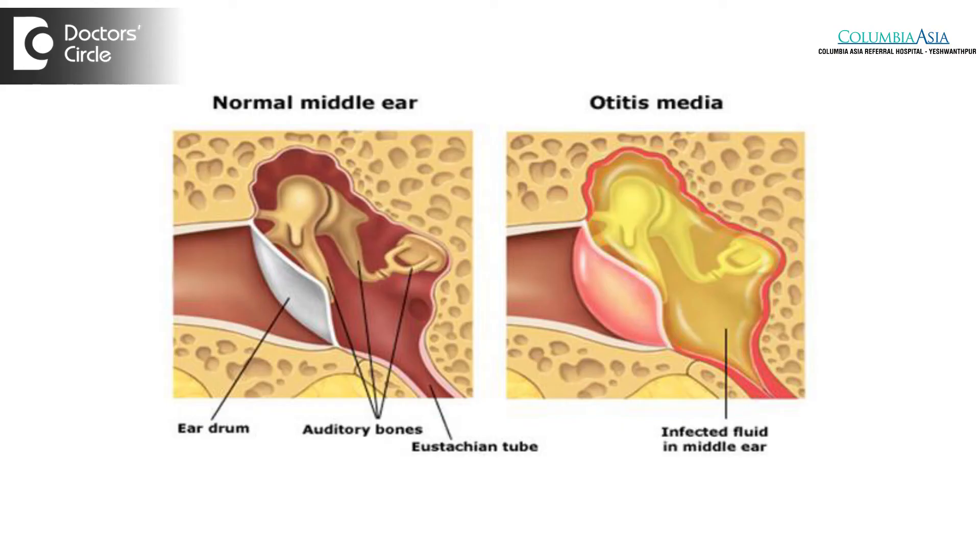Sometimes children develop middle ear infections called otitis media, which leads to accumulation of fluid or pus in the middle ear causing conductive hearing loss. This can sometimes lead to a hole in the eardrum, at which point we term the condition acute suppurative otitis media, and this too can lead to some amount of hearing loss.